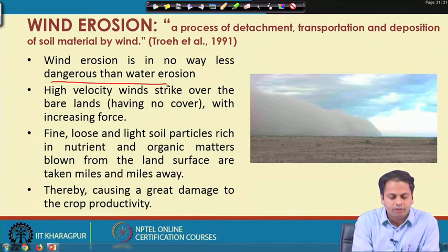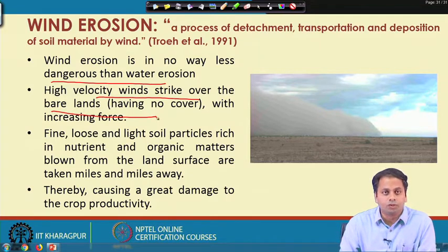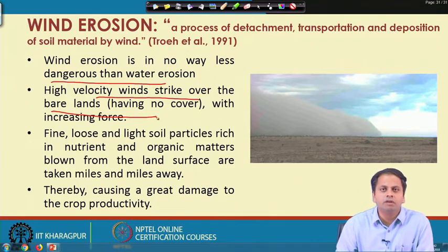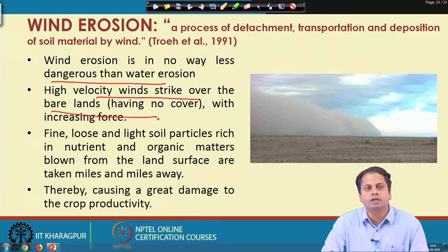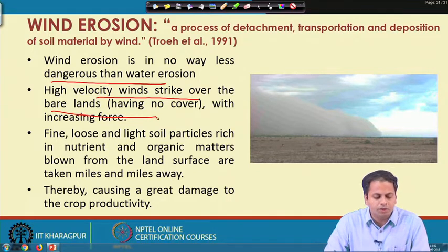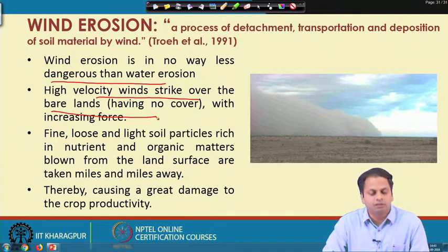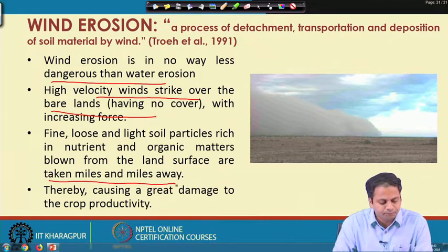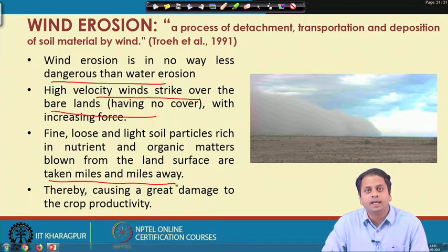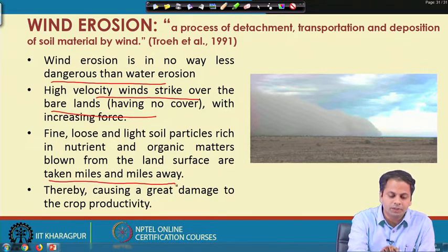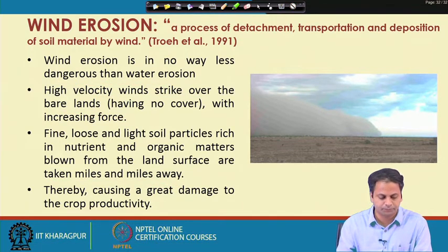When high-velocity wind strikes over bare lands, particularly where there is no vegetation cover or the soil surface is completely smooth and barren, the finer and lighter soil particles — which are rich in nutrients and make the soil fertile — are lifted by wind and transported miles away. Wind erosion is responsible for causing great damage to crop productivity because the most fertile layer is being eroded.